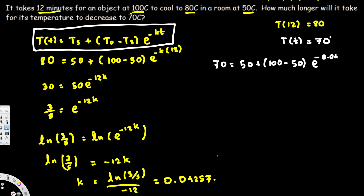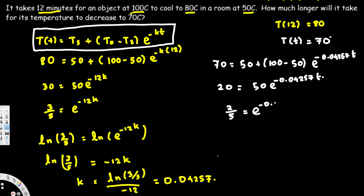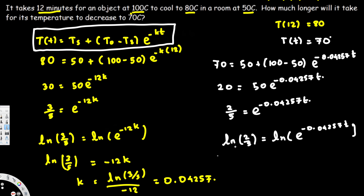Let's simplify. Bringing 50 to the other side: 70 - 50 = 20, and 100 - 50 = 50, giving us 20 = 50 * e^(-0.04257t). Dividing everything by 50: 2/5 = e^(-0.04257t). Taking the natural log of both sides: ln(2/5) = ln(e^(-0.04257t)), and since ln and e cancel, we get ln(2/5) = -0.04257t.